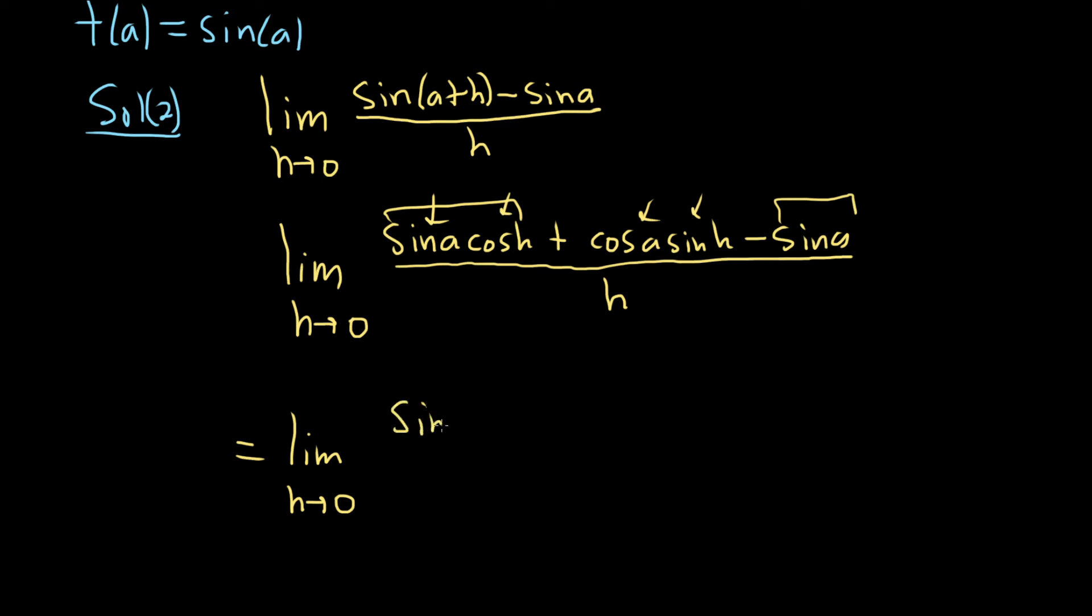So sine a cosine h minus 1 over h. So that's taking this and this and pulling out the sine of a. Okay, so we'll have cosine h minus 1 and then plus, then we'll take this one here, cosine a sine h over h.